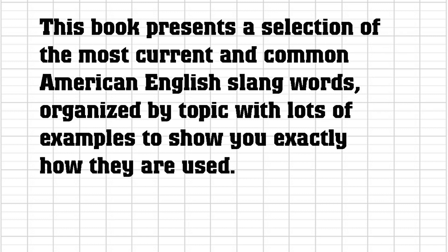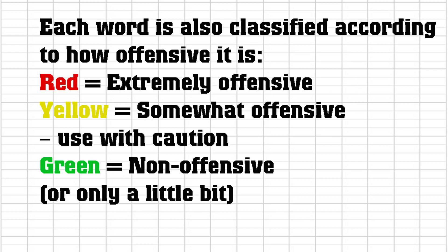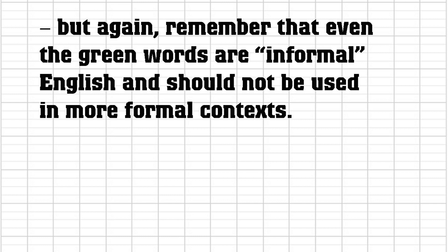This book presents a selection of the most current and common American English slang words, organized by topic, with lots of examples to show you exactly how they are used. Each word is also classified according to how offensive it is. Words in red are extremely offensive. Words in yellow are somewhat offensive, used with caution. And words in green are non-offensive, or only a little bit. But again, remember that even the green words are informal English and should not be used in more formal contexts.